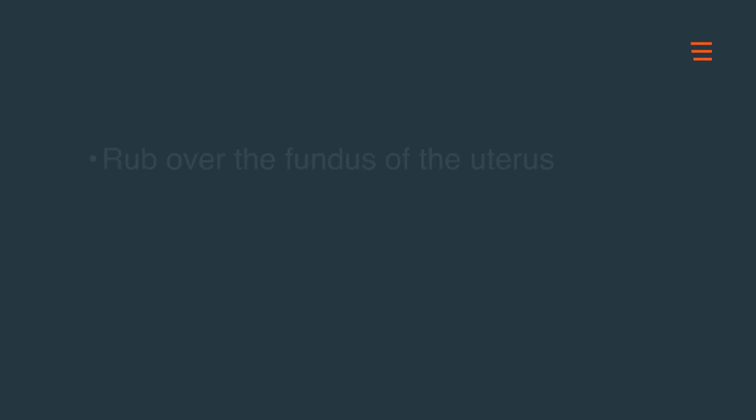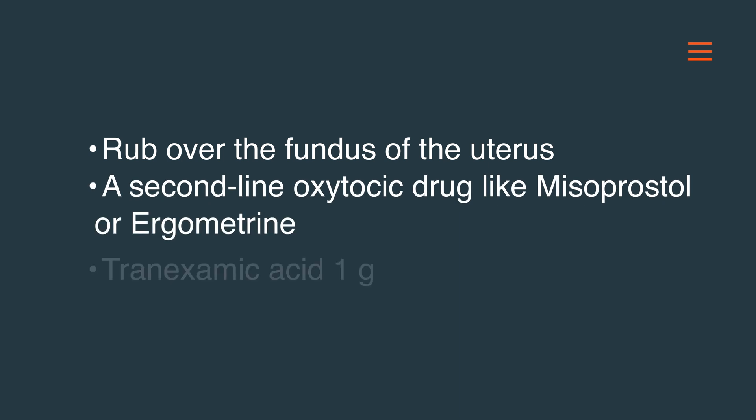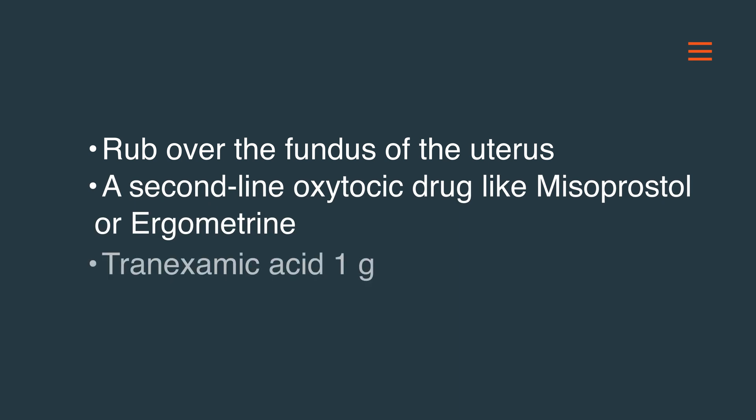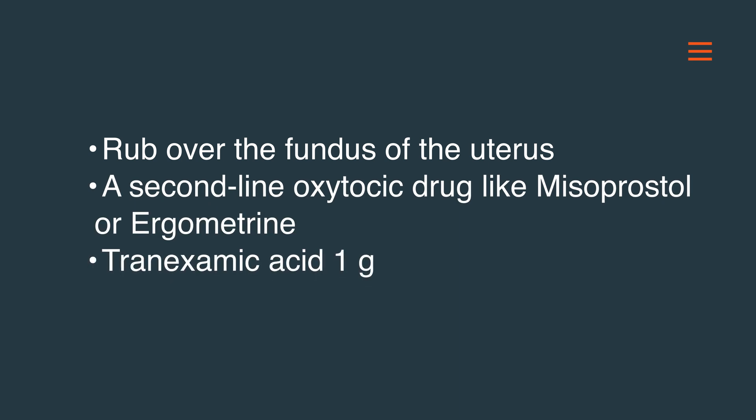Bleeding from an atonic uterus is managed initially by rubbing over the fundus of the uterus to stimulate contraction and retraction. A second-line uterotonic drug like misoprostol or ergometrine should be administered according to standard of care.